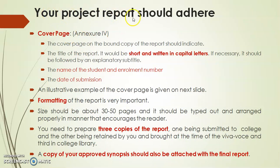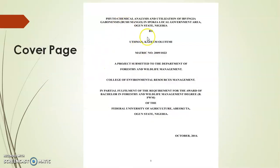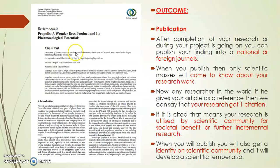Cover page: your project cover page should adhere to the standard format. The first cover page should be short and written in capital letters, including: student name, enrollment number, and date of submission. An example is given in the next slide. Formatting: it should be 30 to 50 pages. There should be three copies of your project — one at college, one in the library, and one with your guide (or you can keep one yourself). A copy of your approved synopsis should also be attached with the final report so that the examiner will not ask maximum questions. This is a copy of your cover page as one example. Afterwards you can come out with an outcome like a review article or any publication — national or international — which will be cited and reported in your project.